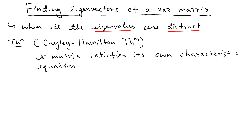This is a very powerful result. It means that if you know the characteristic equation — which we normally find by evaluating the determinant of a certain matrix — then the matrix A should satisfy that equation.